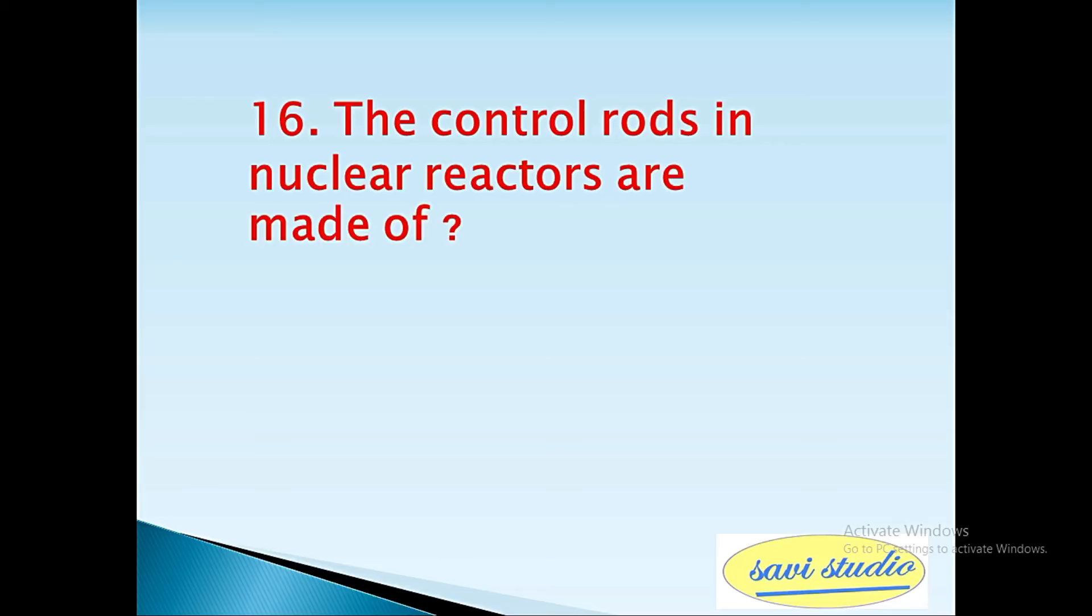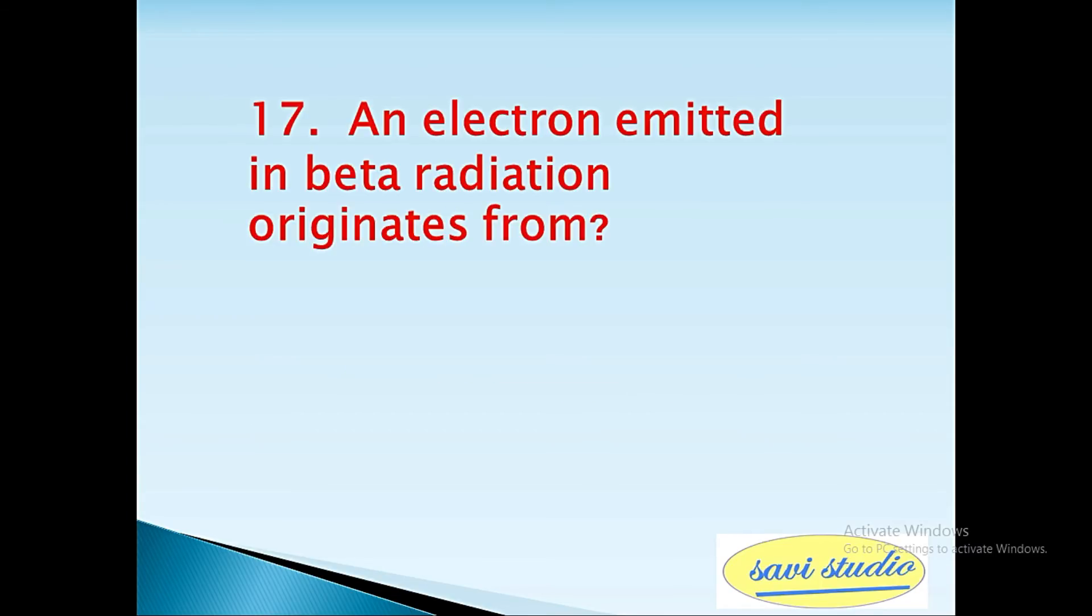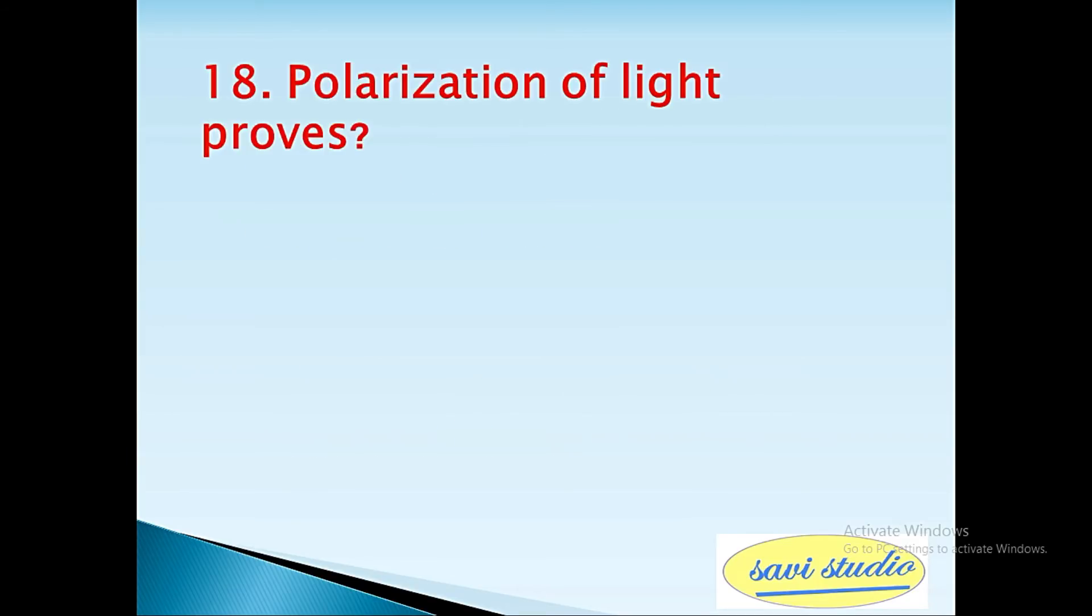16th question: The control rods in nuclear reactors are made of? Answer: cadmium. 17th question: An electron emitted in beta radiation originates from? Answer: decay of a neutron in a nucleus. 18th question: Polarization of light proves? Answer: the transverse nature of light.